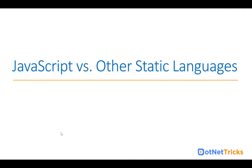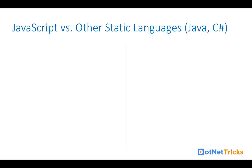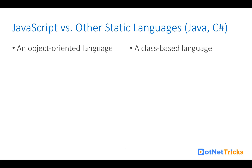Let's see how JavaScript is different from other static languages like Java and C#. JavaScript is an object-oriented programming language because everything revolves around objects. If you are talking about static languages like Java and C#, these are class-based languages because whatever code we write in C# and Java, we write it within a class.